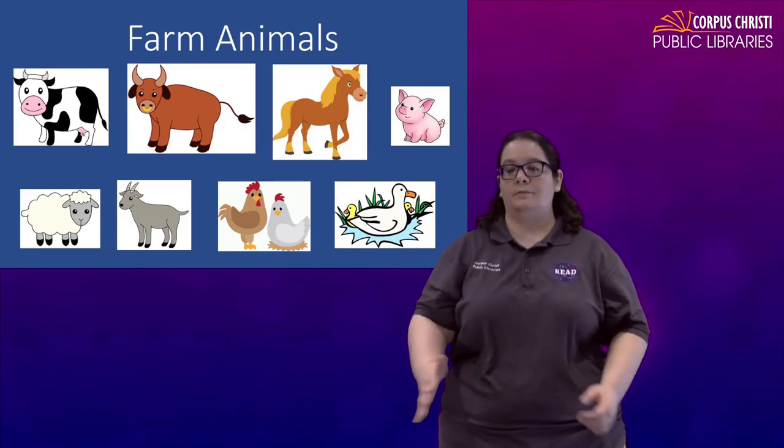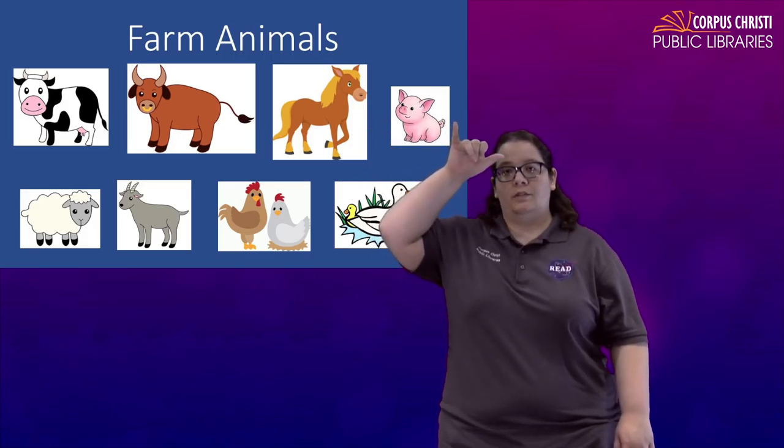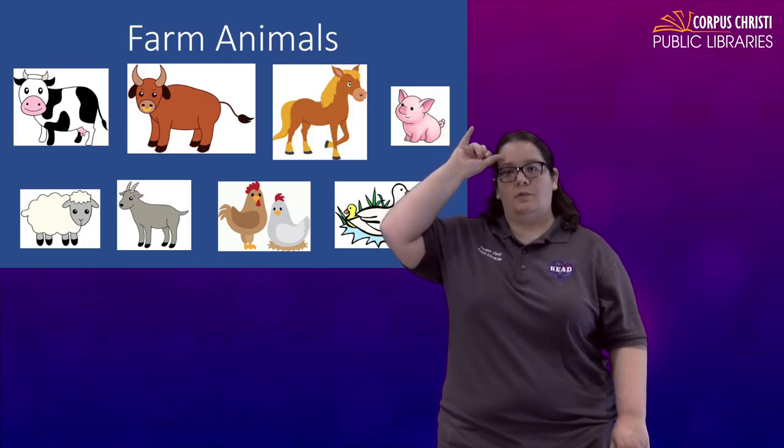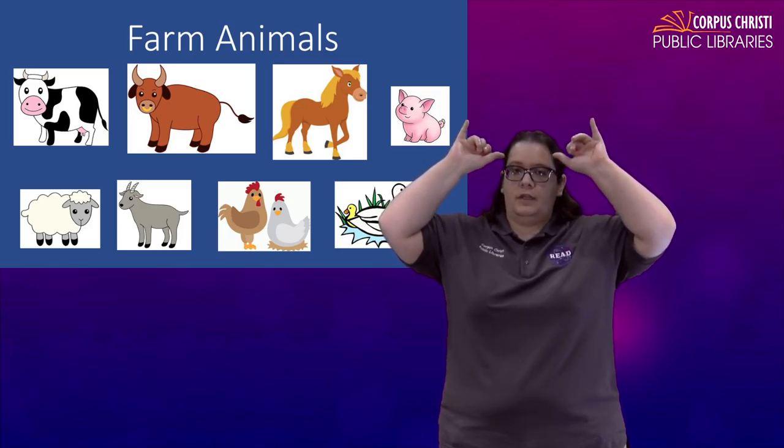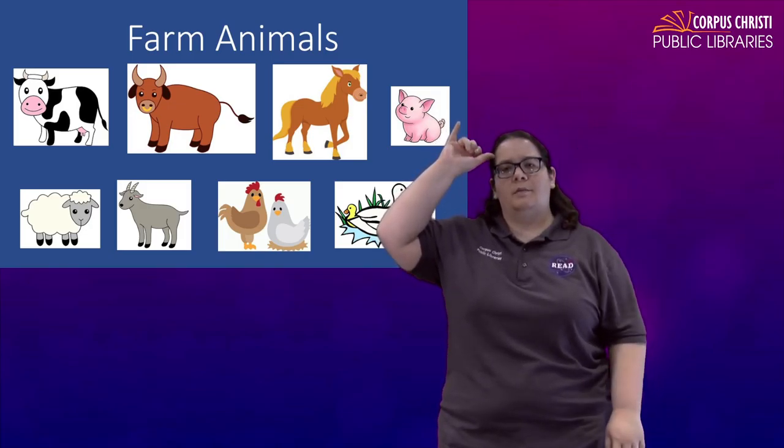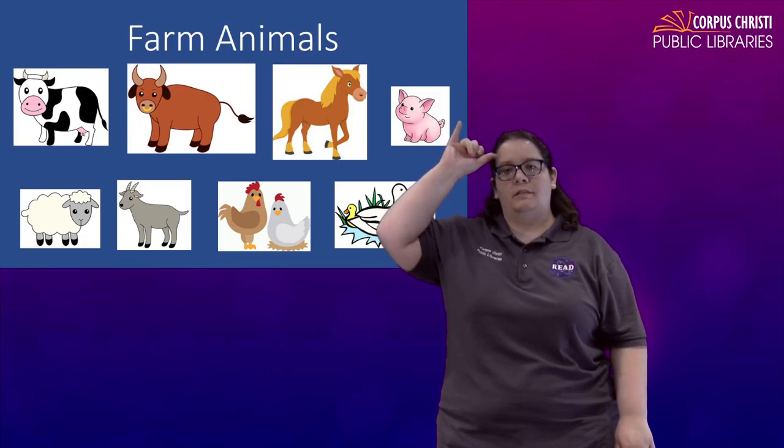First we have a cow. For that you're going to pretend like you have horns. Take a Y place it right at your temple and you give it a twist. Cow. You might see this done with both hands if someone's telling a story but if you're just talking about the animal in general you can just do one hand. Cow.